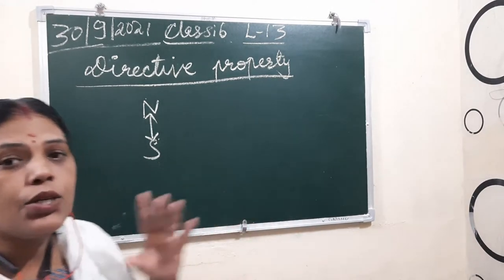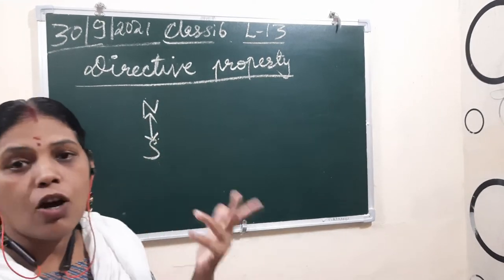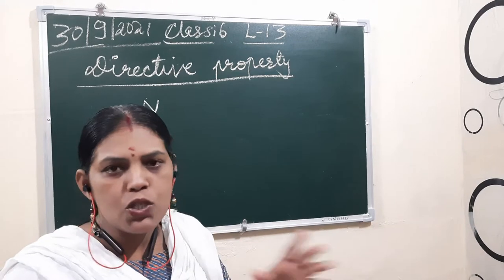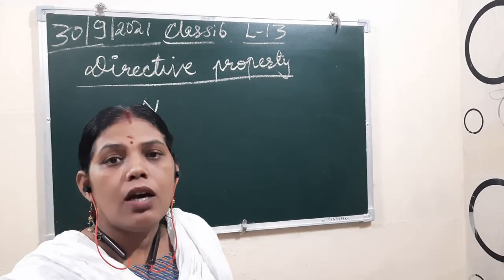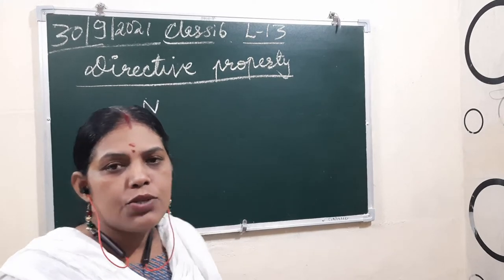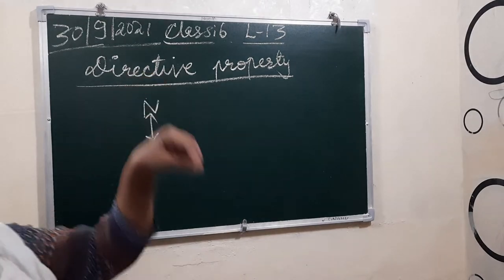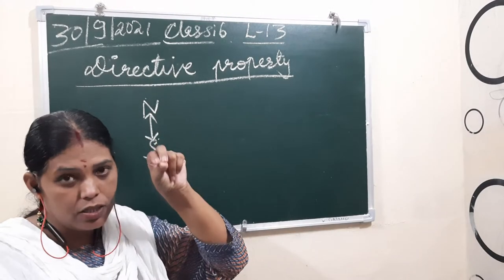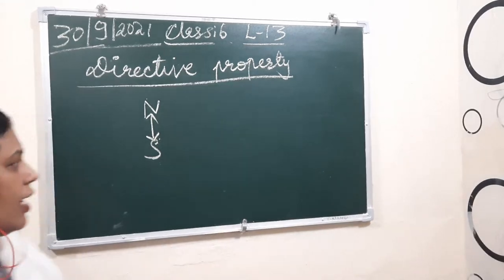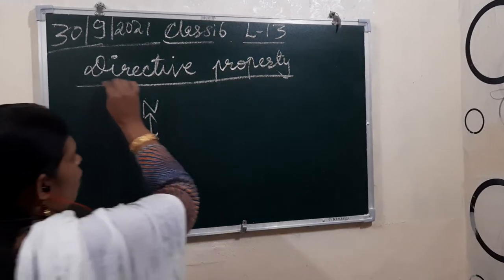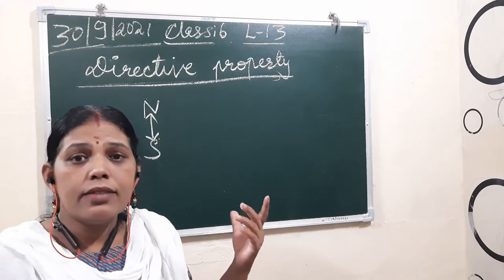Because of this directive property, travelers around the world started to use the magnet for finding directions. They used to move here and there, so at that time if they wanted to find directions, they would keep the magnet freely suspended — when it comes to the north-south direction, from that they can find east and west also.